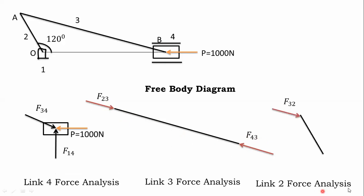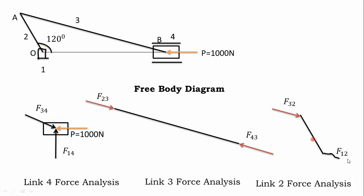For link two force analysis, draw link two at 200 mm, which means 2 centimeter length. Link two has two forces: one coming from link one and another from link three. The force from link three is parallel to link three. The force from link one — we know of its presence but not its direction, so we mention it with a zigzag line. This completes the free body diagrams of all links: link four, link three, and link two.